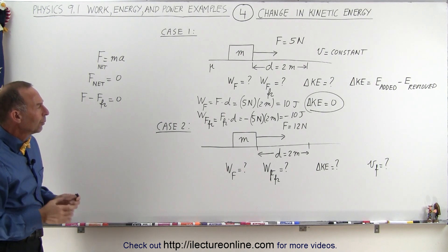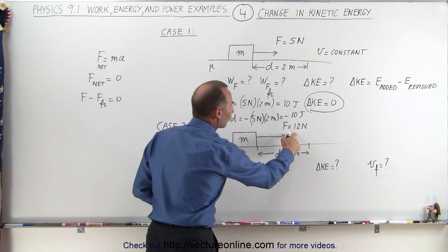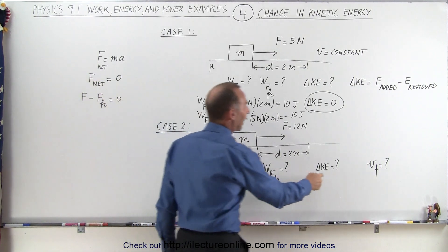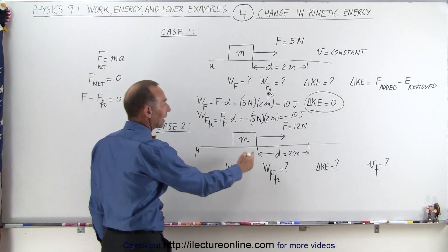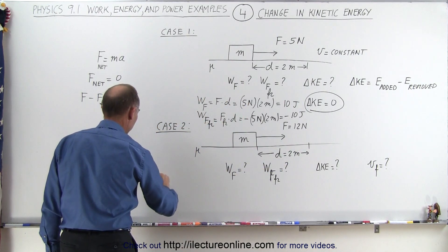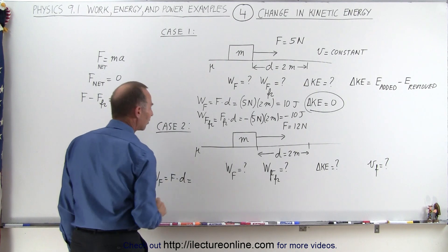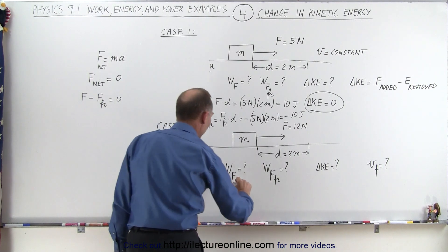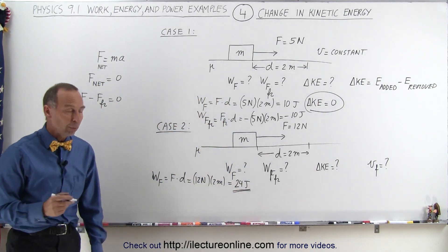Now we go to Case 2. We have the same block with the same coefficient of friction, but now we're pulling it with a force of 12 newtons over the same distance of 2 meters. The work done by the force is equal to the force times the distance: 12 newtons times 2 meters equals 24 joules of work done by the applied force.